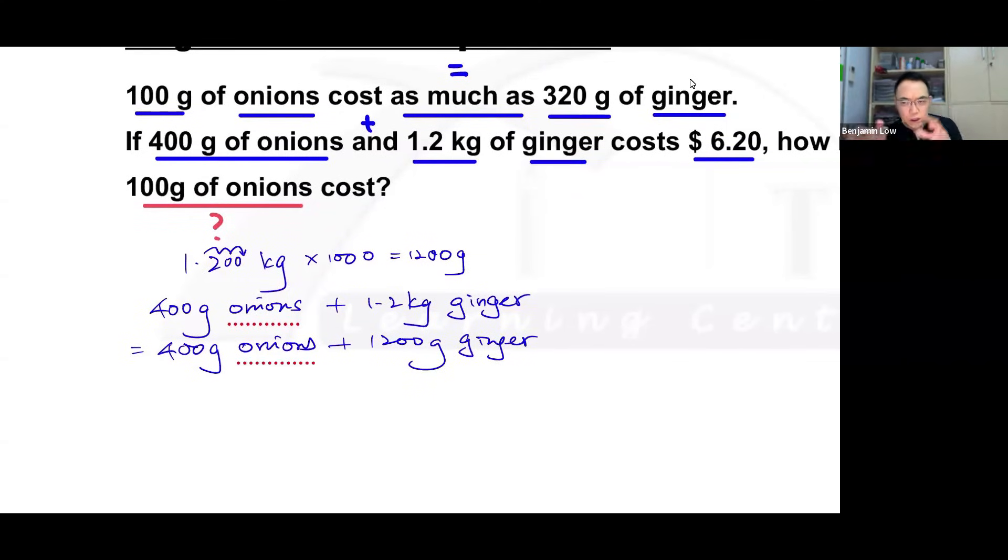Now in questions where there are two types of objects, onions and ginger in this case, you need to change them to the same thing as far as possible in order to find the value. So you could choose to change 100 into 400, or you could choose to change 1,200 into a smaller number. In this case, I'm going to choose to change ginger into onion because the question is asking about onions.